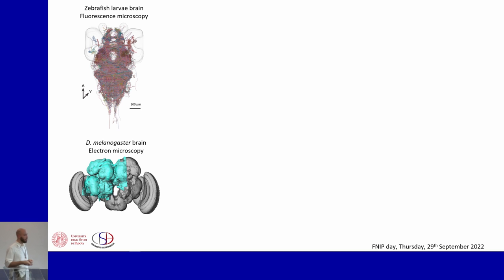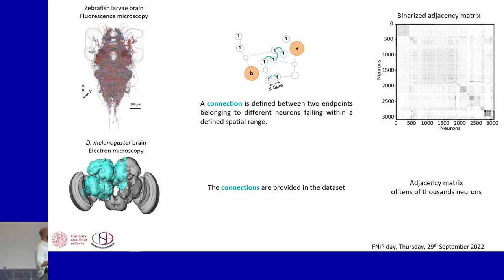These datasets can come either with the connections between the neurons or not. In the later case, one can just define a connection between two distinct neurons by through a tunable proximity range.